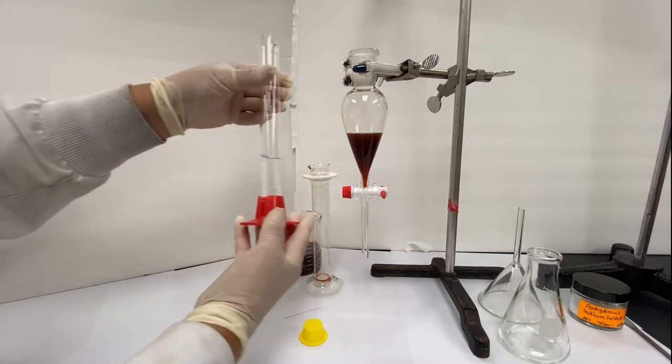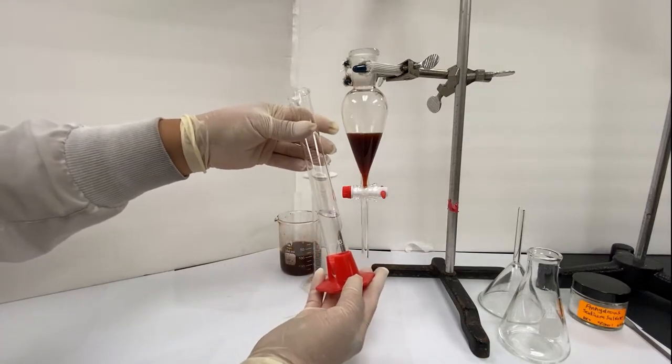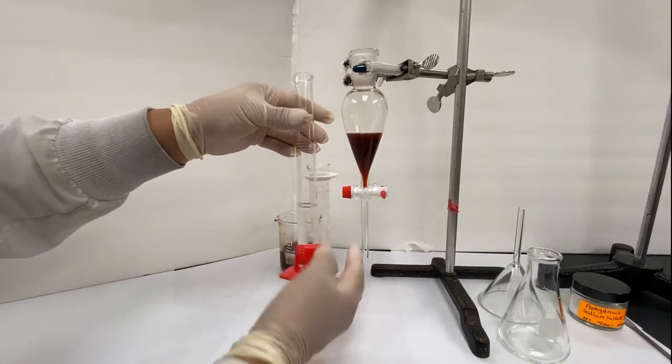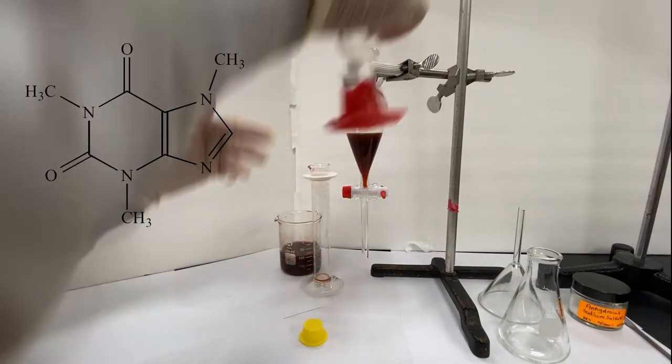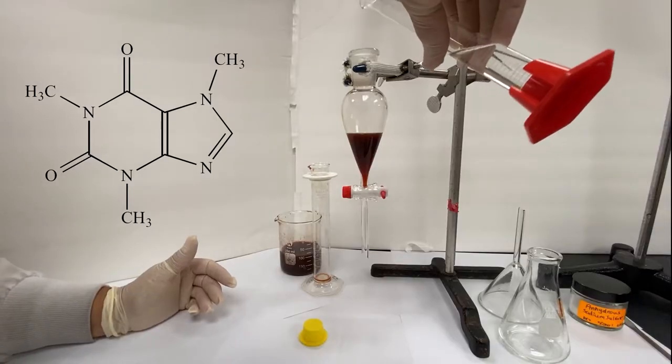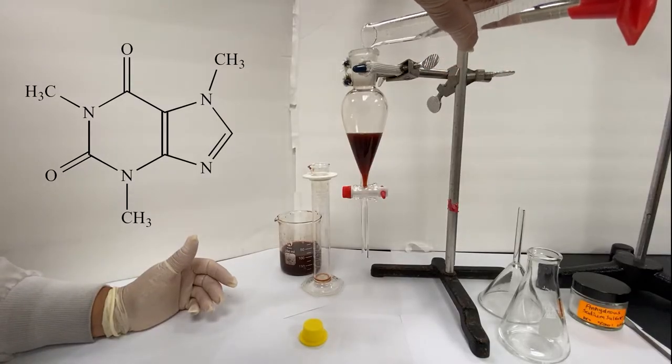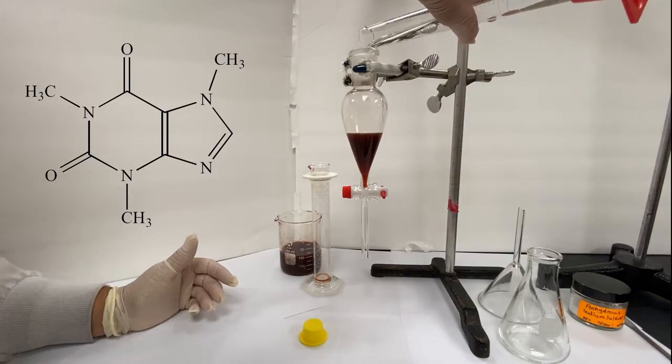To perform the extraction, we will need to use a solvent which the caffeine will be more soluble in than water and will also have some other property to separate itself from the rest of the tea. If we look at the structure of caffeine, we can see why it's considered slightly soluble in water with its polar groups. We can increase its solubility in water by increasing the temperature, which is why we boiled the tea in the first place. We can also see by its structure that it will be soluble in certain organic solvents as well.